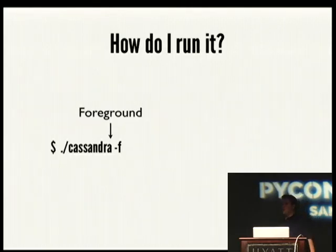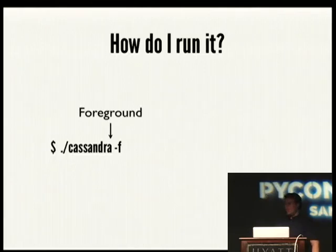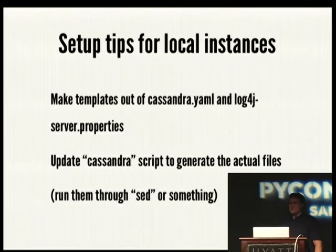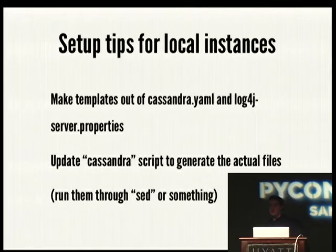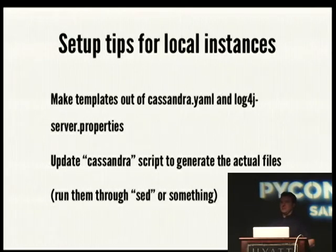Once you've set up your configuration files, you run it from the command line. Saying dash-F runs it in the foreground; by default it'll daemonize and run in the background. A setup tip: make templates of those configuration files and have the startup script run them through something to stick the current path in there, so you can check it all into Git for your development instance. When someone pulls it down the first time and starts it, it generates configuration files to run Cassandra in place in whatever folder the person checked out the code to — nice for running unit tests.